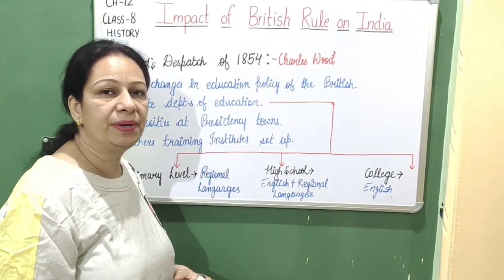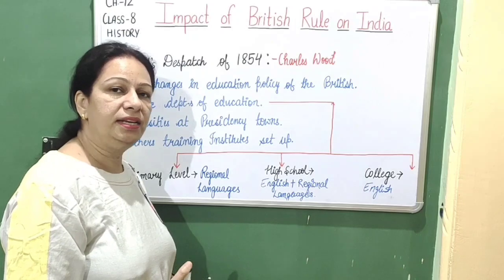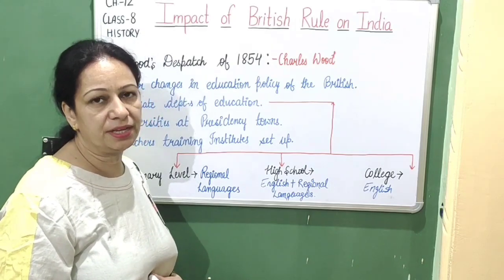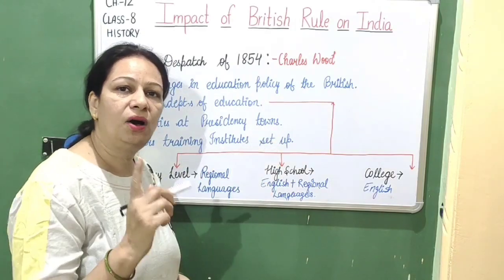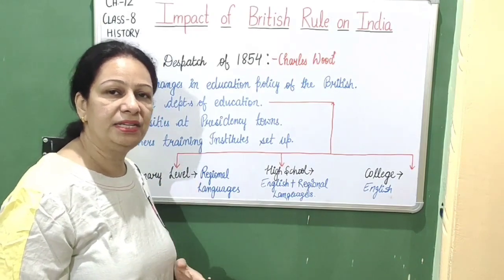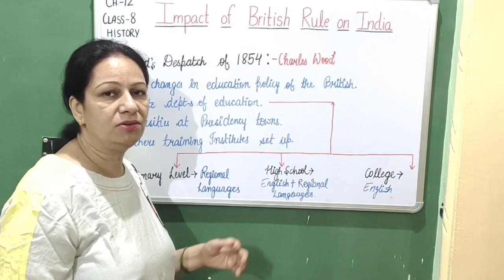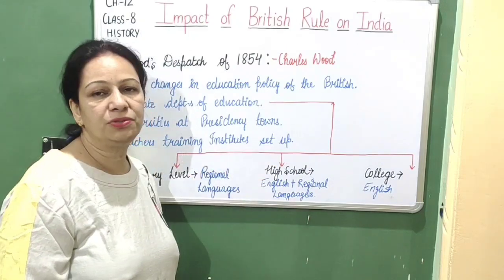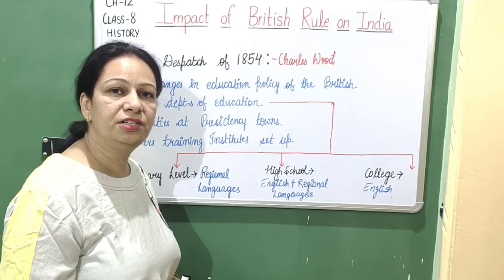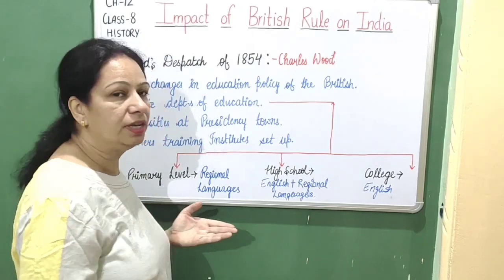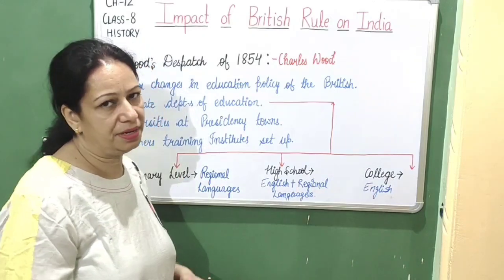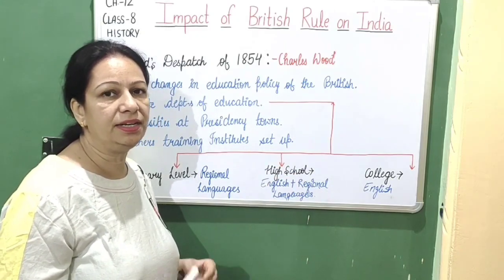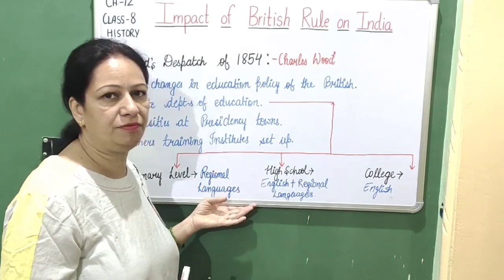Universities were set up at Presidency Towns — Bombay, Calcutta, and Madras. These were the three major Presidency settlements in British India. In addition, Teachers Training Institutes were also set up to provide education at different levels — primary, high school, and college. This was the Wood's Dispatch of 1854.